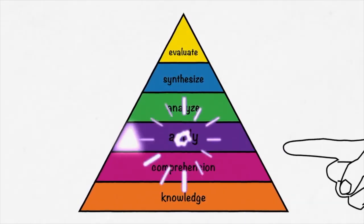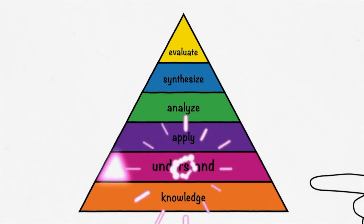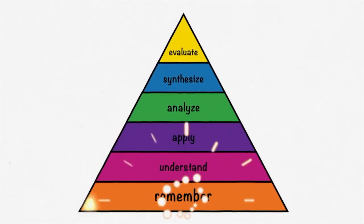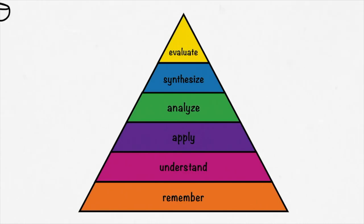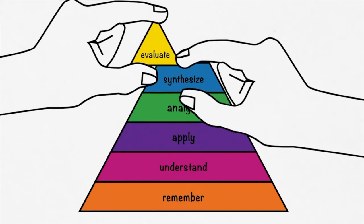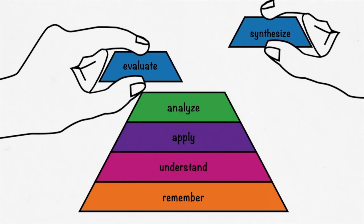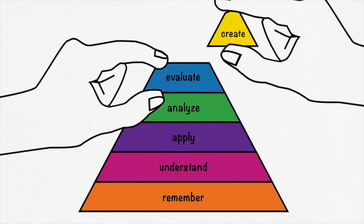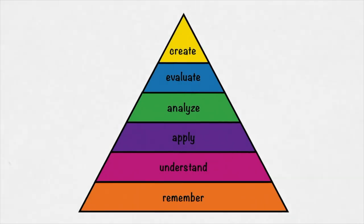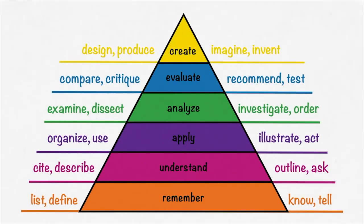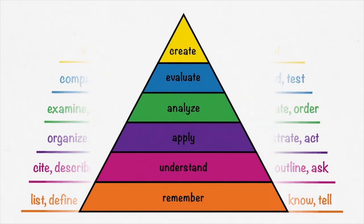One of their main changes was updating the nouns associated with each level to action-oriented verbs, positioning thinking as an action-based process rather than one of passive acquisition. For example, knowledge was replaced with remember, analysis was changed to analyze, and so on. They also reordered the last two steps—evaluation, previously at the top, was moved down, and creating, formerly synthesis, was moved to the top. With this framing, educators have several different verbs, questions, and instructional strategies associated with each level.